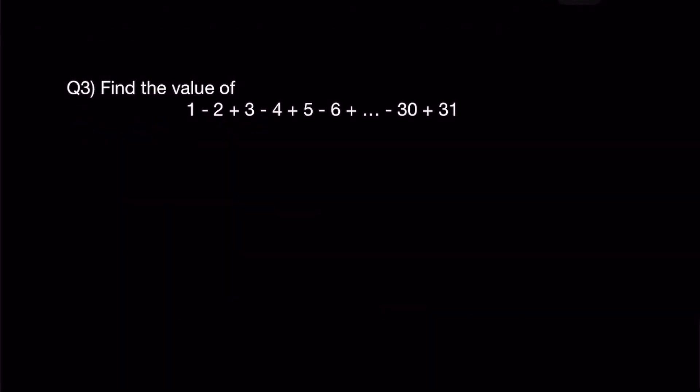Moving on to question 3. You are supposed to find the value of 1 minus 2 plus 3 minus 4 all the way following the pattern minus 30 plus 31. What you should realize is minus 2 plus 3 gives me 1. Minus 4 plus 5 will also give me 1. Minus 6 plus 7 gives me 1. And the final minus 30 plus 31 will also give me 1. So what you should be finding is how many pairs of 1 are there?